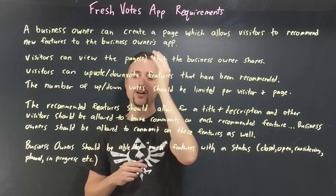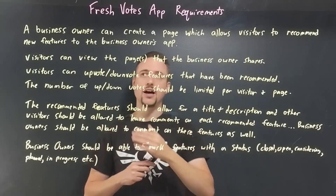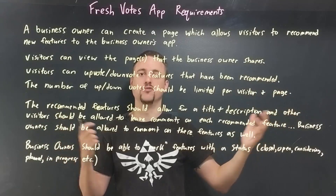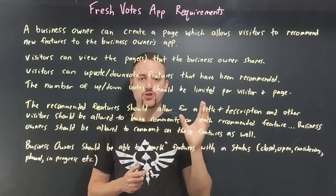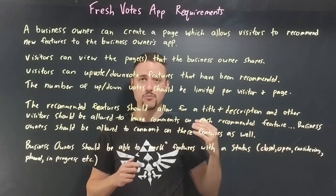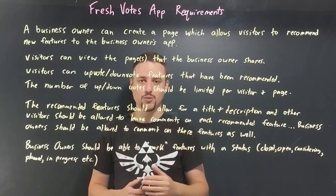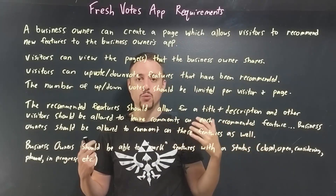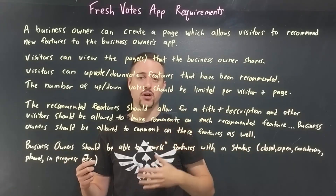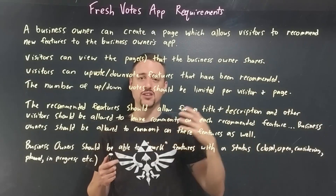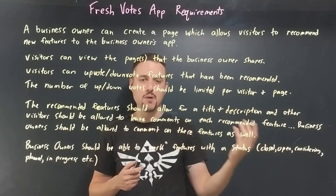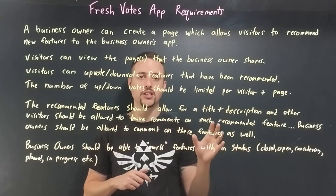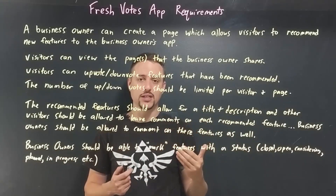We are talking about FreshVotes, which is an application. I've written out on the screen the requirements for this application. This is meant to duplicate a real-world scenario — where you would be given a bunch of text that explains what you need to build, whether it's a project from scratch, a feature, an enhancement, a bug fix — usually there's some text delivered to you that explains exactly what you need to do.